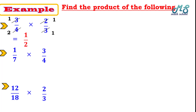Next example: 1 over 7 times 3 over 4. We don't have any common factors, so just multiply: 1 times 3 equals 3 over 7 times 4 equals 28. The product equals 3 over 28.